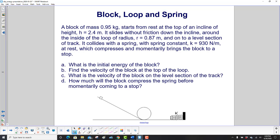Okay, we've done the block and loop, now we're going to add a spring to it. So we have a mass, 0.95 kg, starts from rest at the top of an incline, height of 2.4 meters.